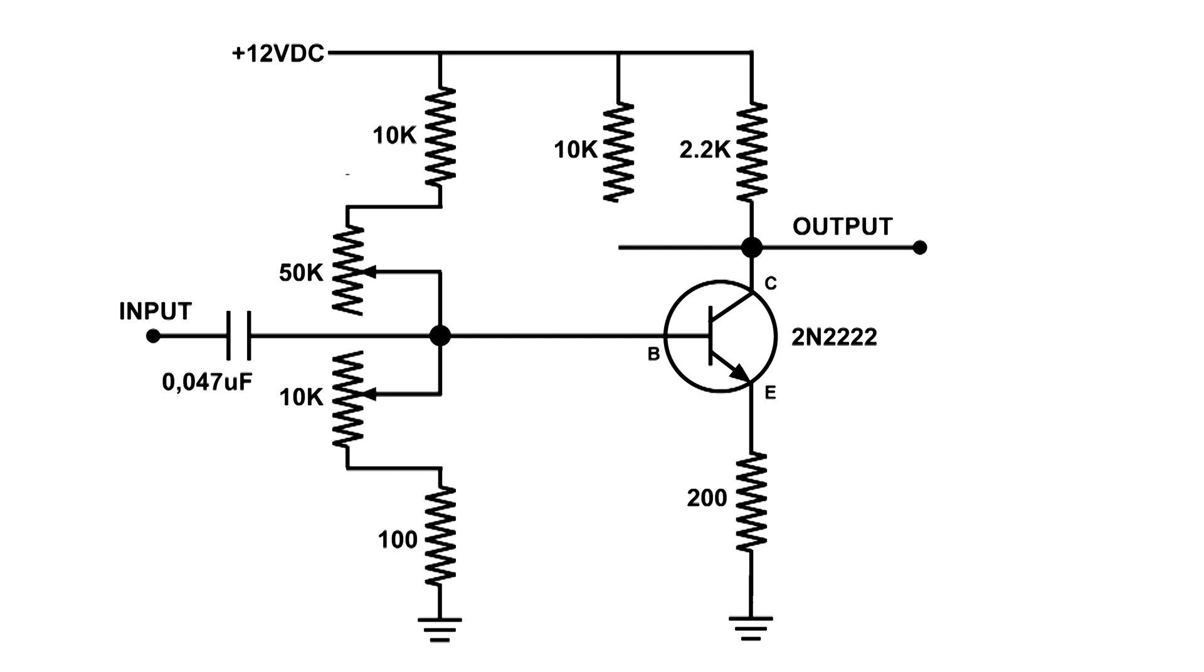We're going to start with a load resistor on the collector of the transistor at 2200 ohms. When we have a nice signal, I'm going to take the measurements, then I'm not going to do anything else to the variable resistors. I'm just going to change the load resistor from 2200 to 10k and we'll see what that does to the bias of this transistor.